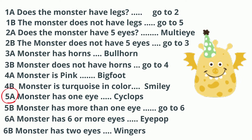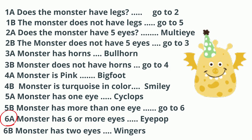At 5, I always start at the a: 'monster has one eye' — no, this little fella has more than one eye, he has two. So I go to 5b: 'monster has more than one eye' — yes, go to 6. 6a: 'monster has six or more eyes' — no. 6b: 'monster has two eyes' — so it is Wingers.